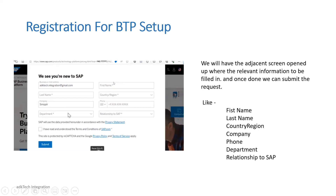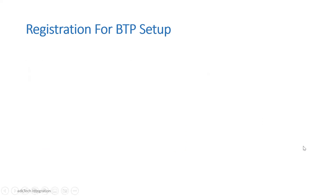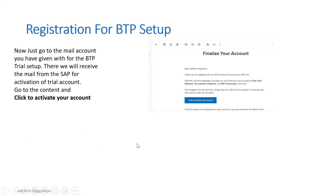The department and relationship with SAP also need to be entered. Once you click the checkbox and fill out the form, press the Submit button. After that, go into the mail account you provided — in my case, a Gmail account. There you will receive an activation mail. Open it and click on 'Activate your account'.